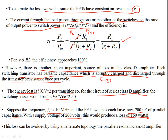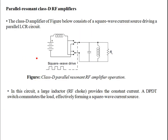To overcome this loss, we can use an alternate topology: the parallel resonant Class D amplifier. 'Parallel' means the switch is in parallel with the LCR configuration. In this parallel Class D amplifier, a square wave current source drives a parallel CR circuit, and the drive of the switches is again controlled by a square wave.